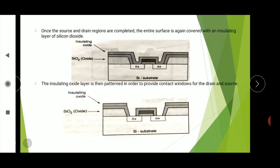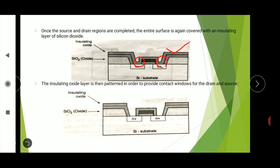Once the source and drain regions are completed, the entire surface is again covered with an insulating layer. The insulating oxide layer is then patterned in order to provide contact windows for the drain and source junctions. Since the source and drain regions are present here, we remove the portion above them to provide the contact window. After this step, we can see there is no insulating oxide present over those contact regions.